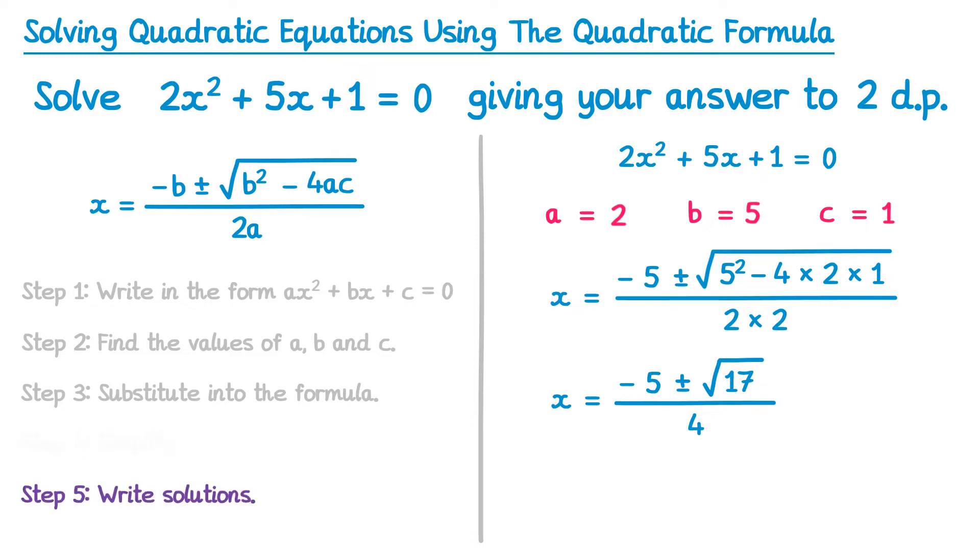The final step of the question is to write your solutions. Now there are two solutions at this point. We have x equals negative 5 plus root 17 over 4, and x equals negative 5 subtract root 17 over 4. Notice the difference between these is the positive here, and the negative here. I would then just type both of these into my calculator to get an answer. Remember the question said round to two decimal places, so if you type the first one in, you'll get x equals negative 0.22, and the second one would give you x equals negative 2.28.